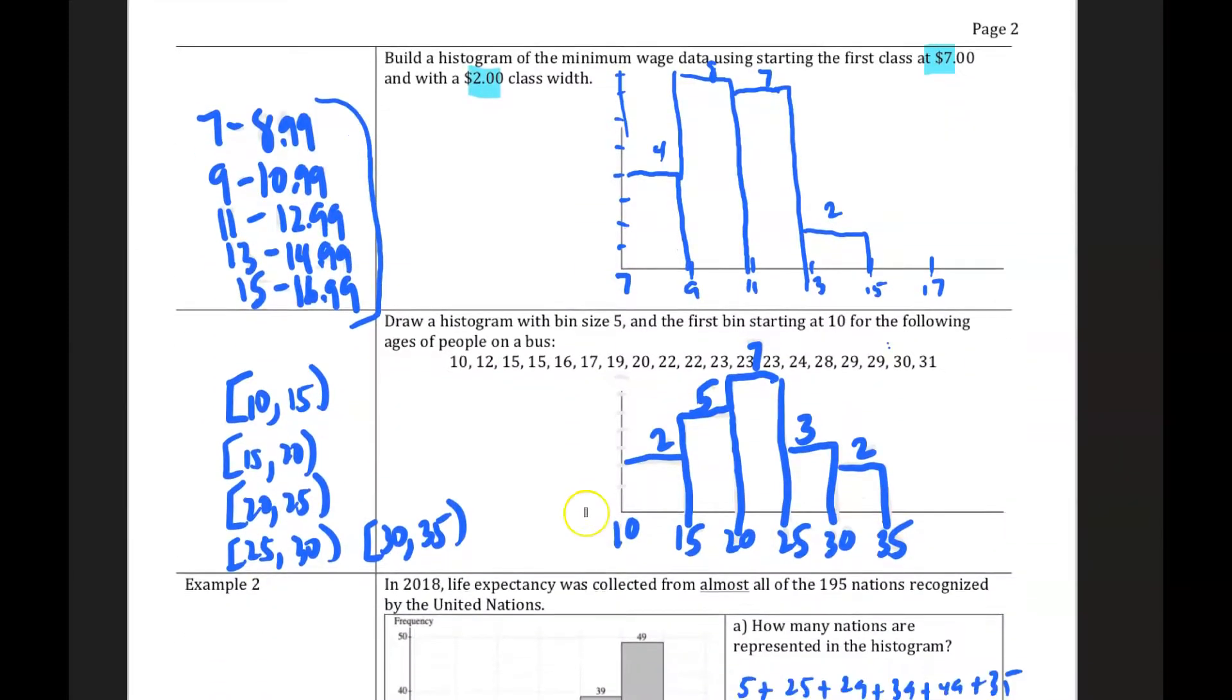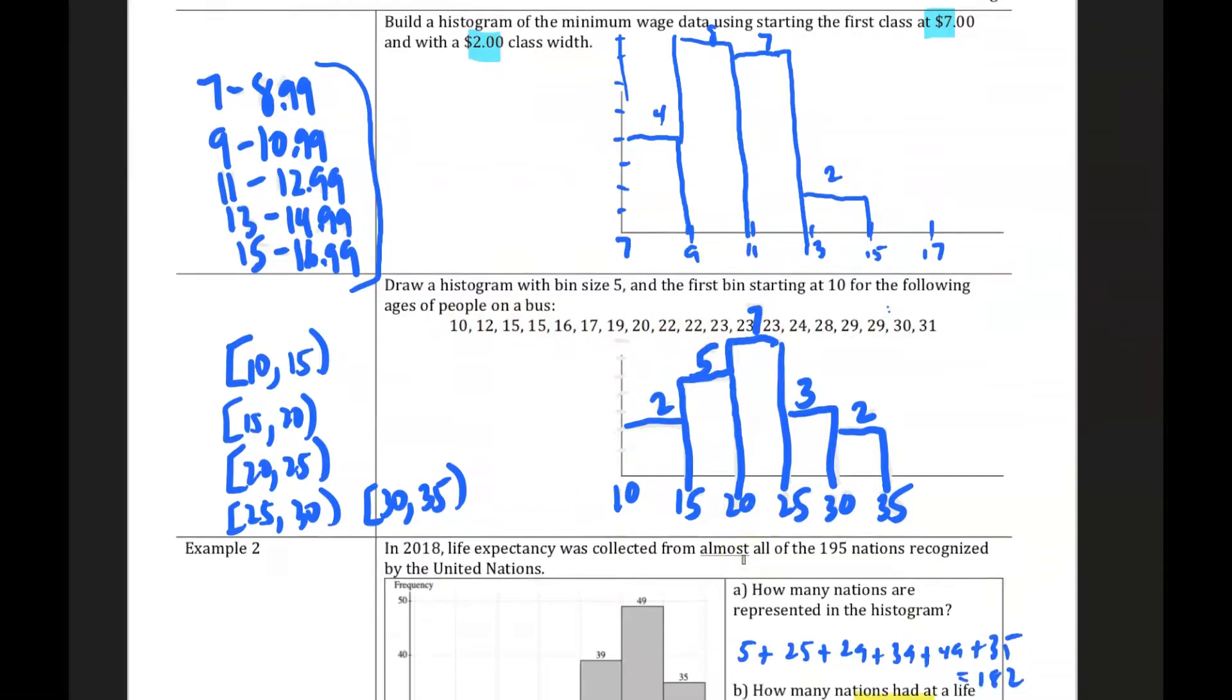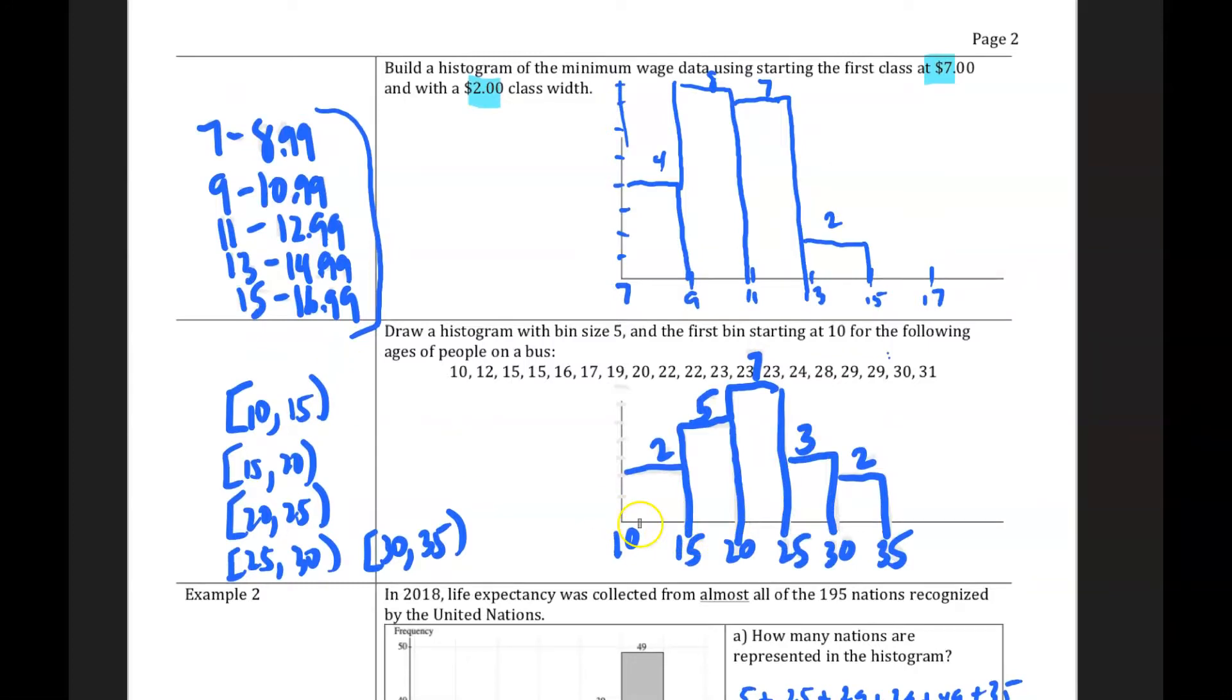And so looking at one more example here, or a problem you could try is what would a histogram with bin size 5, class width 5, starting with 10 for the following ages of people on a bus. And so here's the distribution, here are all the possible values, how often does each occur, and so then you can see what this histogram looks like here based off of the bin width of 5. I decided to show you also what the classes could look like here, and so you could see how you would write it, but this is just one way, remember there are multiple ways to write those classes.